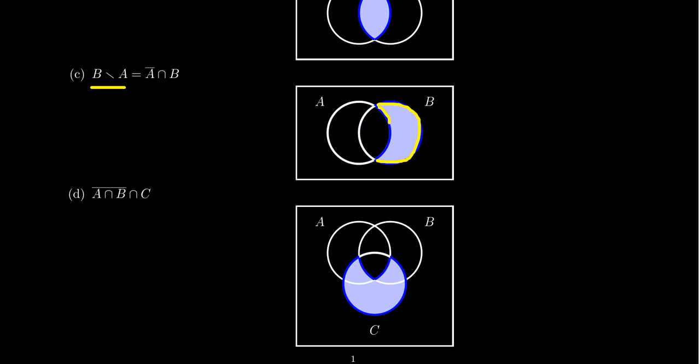Now, remember, the set difference is the same thing as A complement intersect B. And of course, we could also color in this sector over here. This would be the sector of A minus B. And you can do some other ones. Now, those give us some examples of Venn diagrams with two sets.